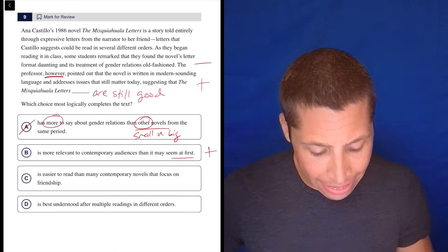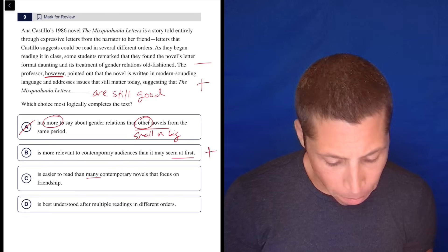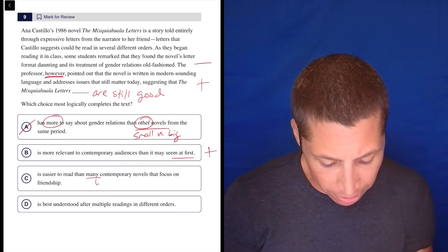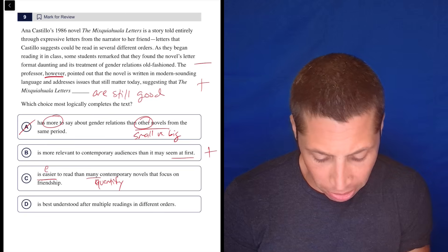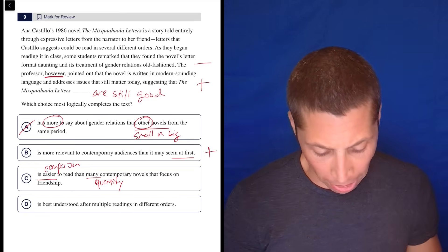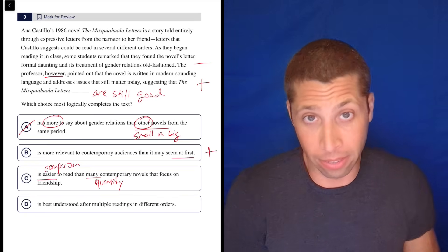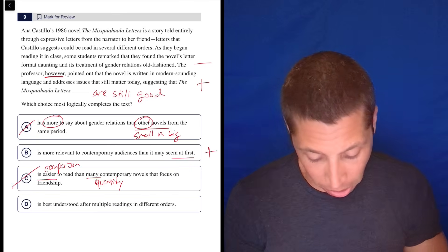It's easier to read than many contemporary novels that focus on friendship. Again, I don't know many contemporary novels. This is quantifying things. Quantifying—it's supposed to be a Q. Easier is a comparison. So these are all problems. I don't know if it's easier to read. They say it's hard. So I don't know. The kids seem to disagree.